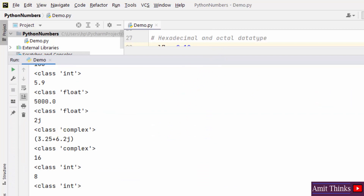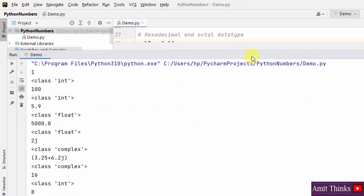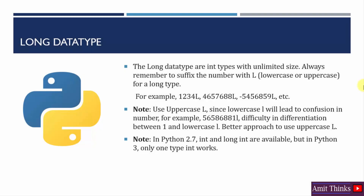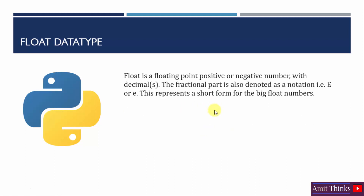Here you can see the types are visible for all of them: complex, int, and float. We also have long type — long data types are int types with unlimited size. You may have seen numbers with a suffix like capital L or small L. Use uppercase L to avoid confusion since lowercase l looks like the number 1. In Python 3 only one type, int, works — meaning long is not supported in Python 3.